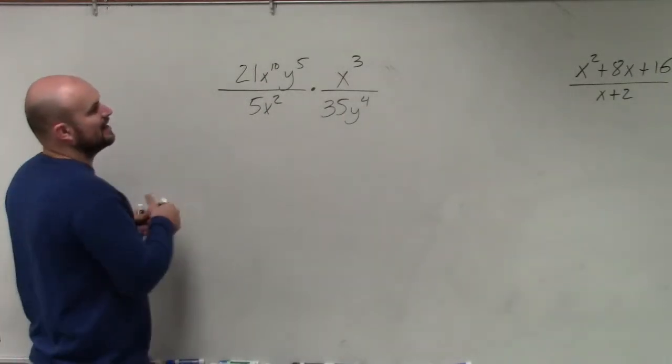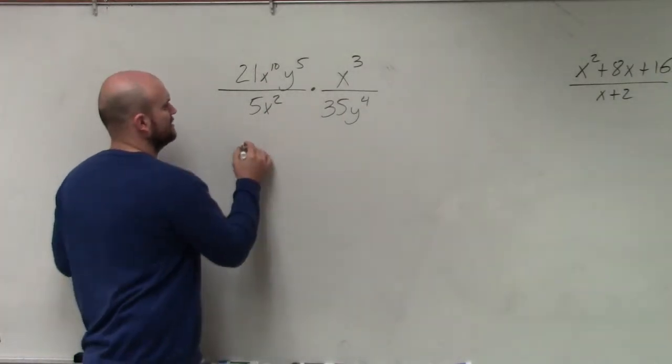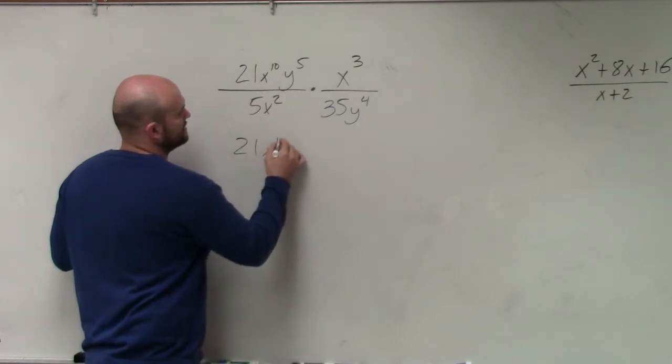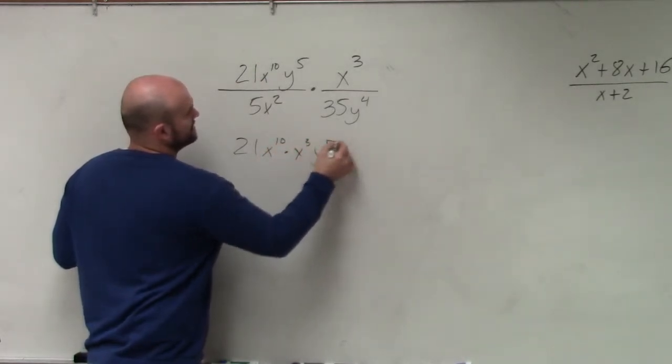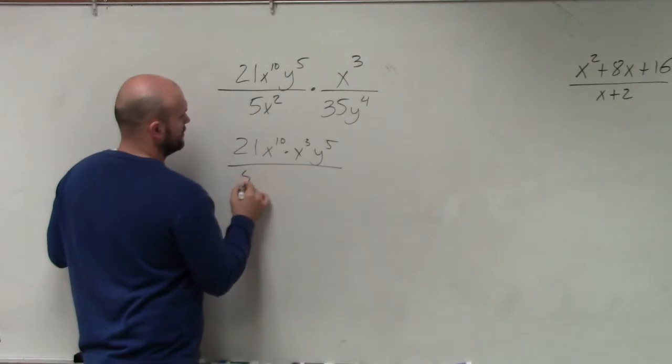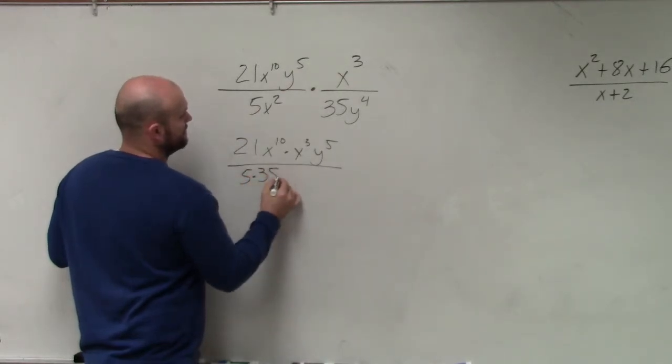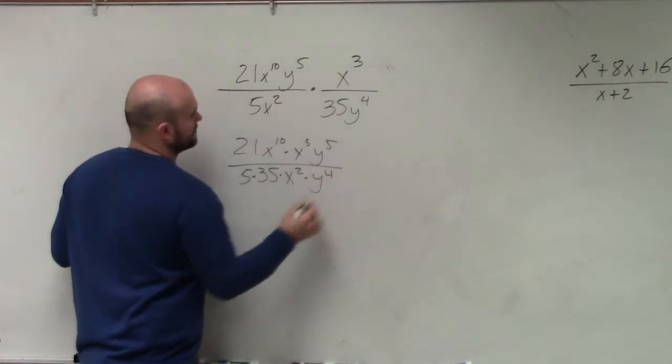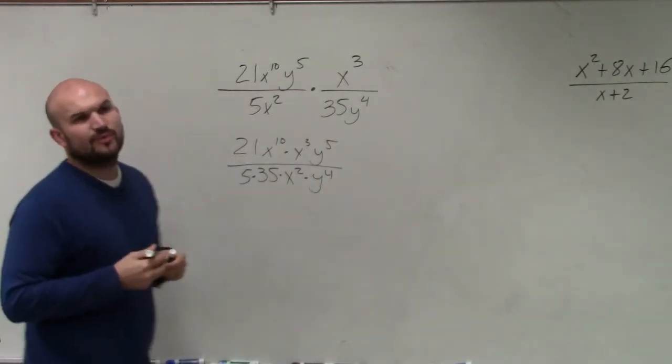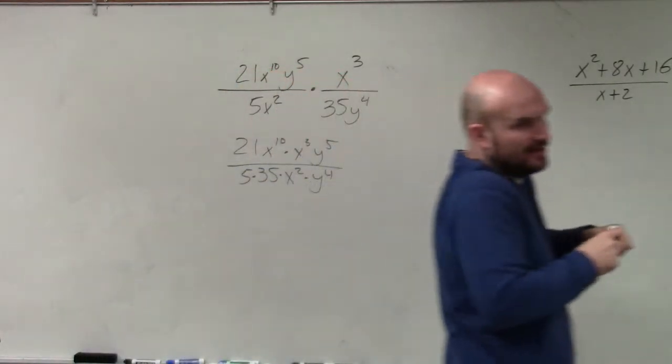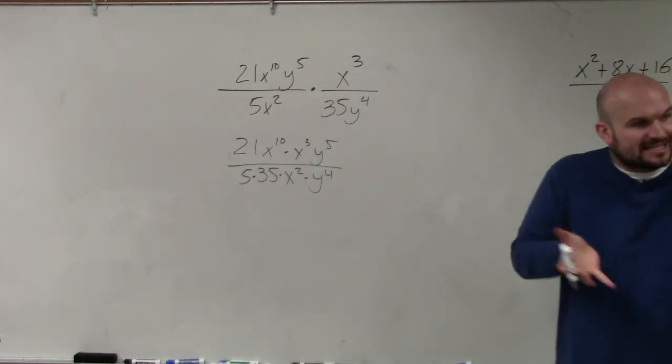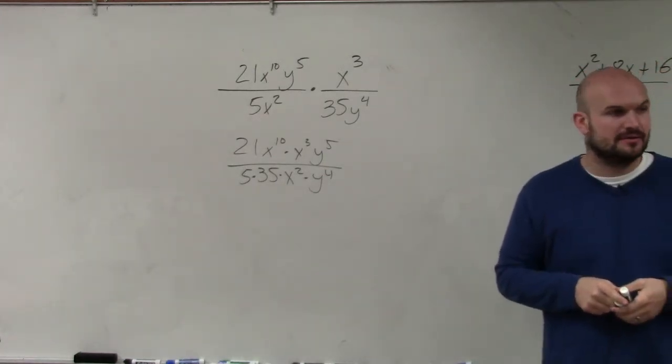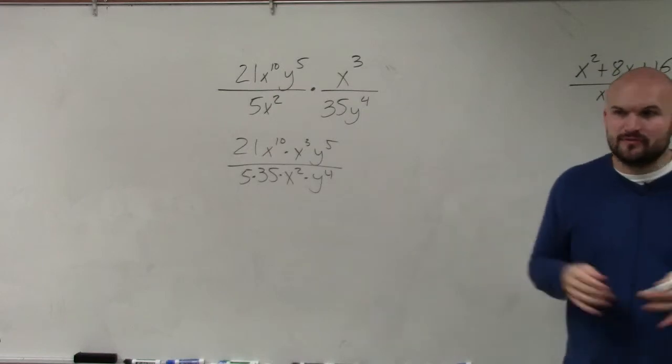Now I'm not going to multiply actually anything. I'm just going to kind of reorder this. So I'm going to have 21x to the 10th times x cubed times y to the fifth all over 5 times 35 times x squared times y to the fourth. So does everybody see what I did? I just reordered everything, just so everything now is next to each other that I can simplify, right? Because everything was all kind of over the place.